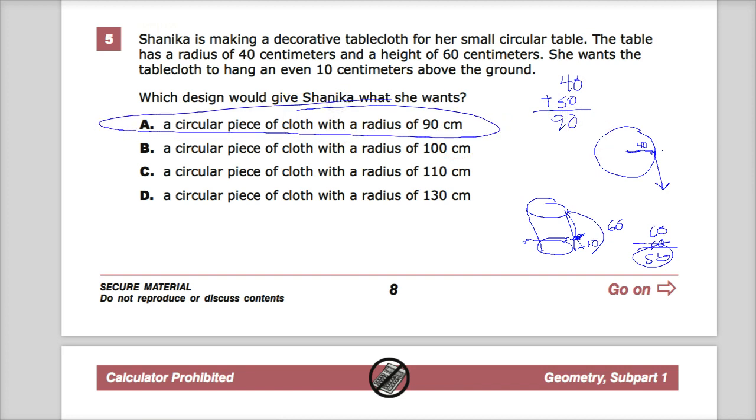That's the nice thing about having the circular tablecloth. When you lay it on there, some of the parts will fold and all the rest. But she'll need at least a radius of 90 centimeters, otherwise it'll be too long.